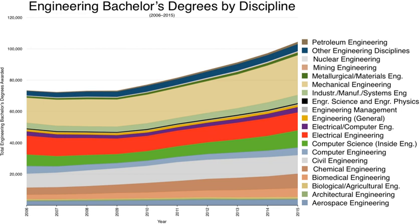In Austria, similar to Germany, an engineering degree can be obtained from either universities or Fachhochschulen (universities of applied sciences). As in most of Europe, the education usually consists of a three-year bachelor's degree and a two-year master's degree. A lower engineering degree is offered by Höhere Technisch-Lehranstalten (HTL), Higher Technical Institutes, a form of secondary college covering grades 9 to 13, with disciplines like civil engineering, electronics, and information technology.